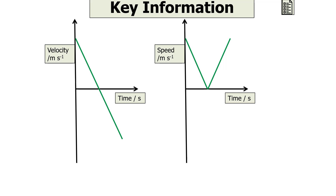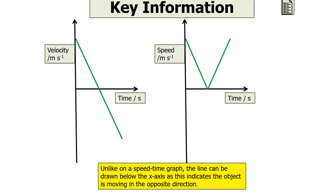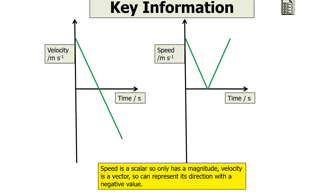This can be shown in the following situation. Unlike on the speed time graph on the right-hand side, the line on the velocity time graph shown on the left can be drawn below the x-axis as it indicates the object is moving in the opposite direction. Speed is a scalar, so it only has a magnitude. Velocity is a vector, so we can represent its direction with a negative value.